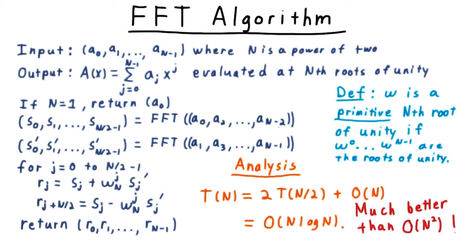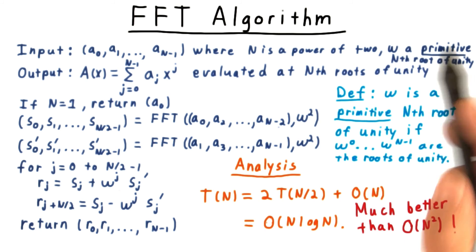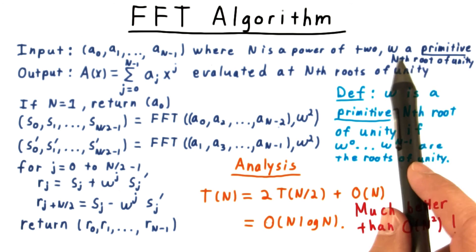There's one other wrinkle that I want to add to the algorithm. And that is to say that this omega parameter here can really be any primitive nth root of unity. All that matters is that all the powers be distinct and that those be the roots of unity. So we can add this as a parameter to our algorithm as well.